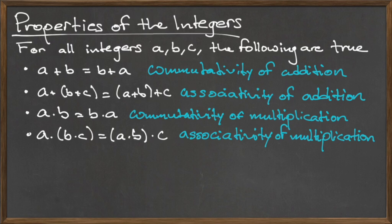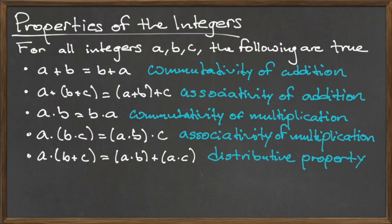The final property allows us to combine the operations of multiplication and addition and is known as the distributive property. This property states that A times the quantity B plus C is equal to the quantity A times B plus the quantity A times C.